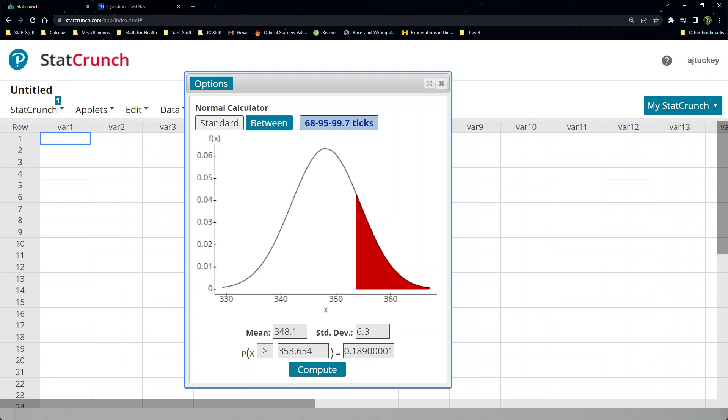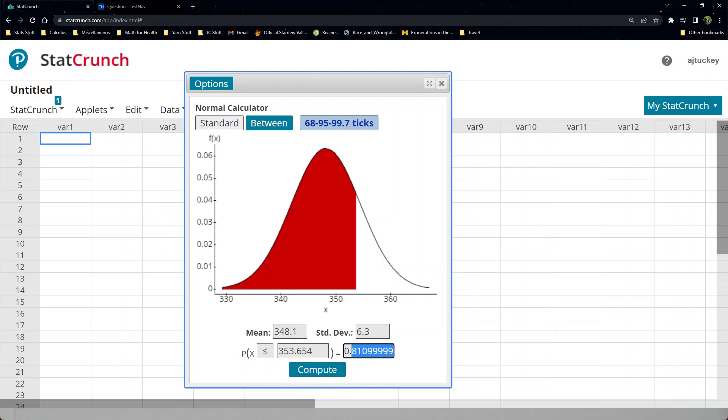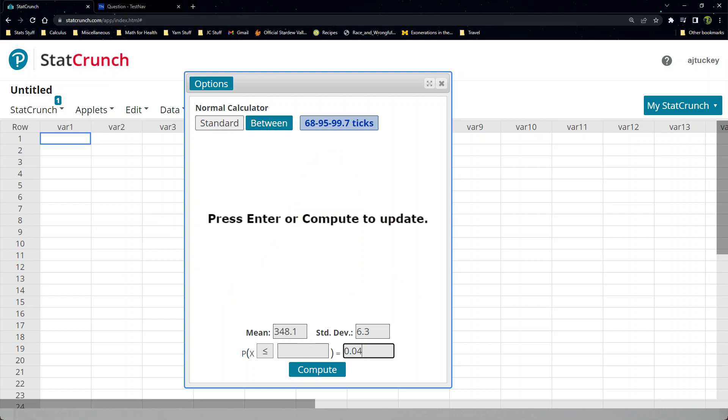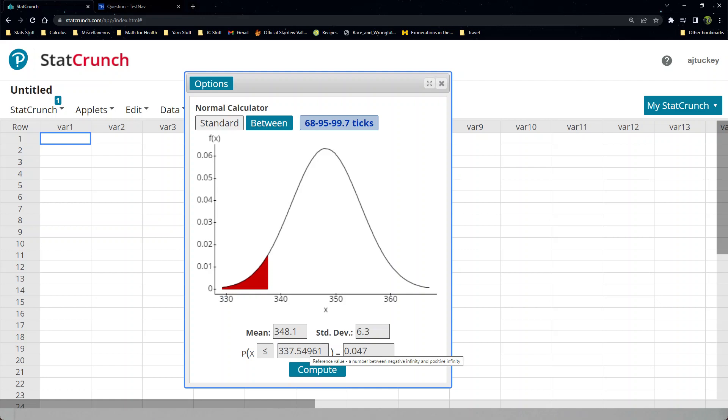The mean is still 348.1, the standard deviation is still 6.3. Those haven't changed. What has changed is I want to talk about left tail area and I want that area to be 0.047, what we just found. And there we have it. So we get 337.549.